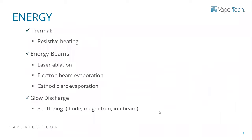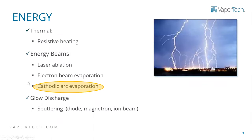You can remove material from the target by either heating it to the point that it boils over, using energy beams applied to the target, or using a glow discharge. Cathodic arc is something we use a lot at VaporTech — you can visualize it as a lightning bolt. You have a very focused stream of ions and electrons, not dissimilar from what you see in arc welding. That concentrated arc, which is a high concentrated plasma, is called cathodic arc evaporation when used for deposition.